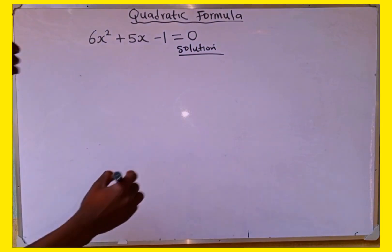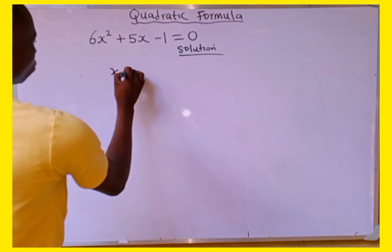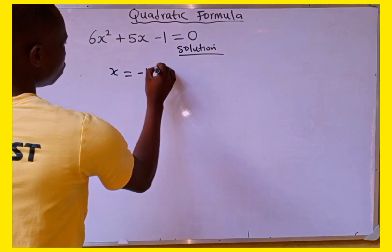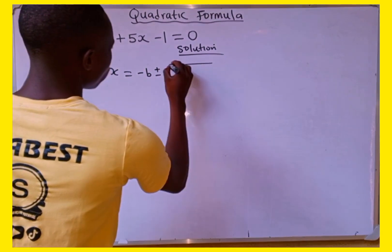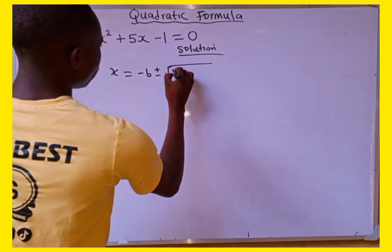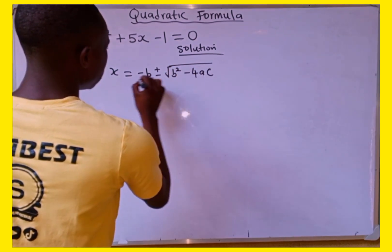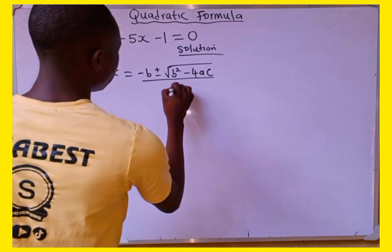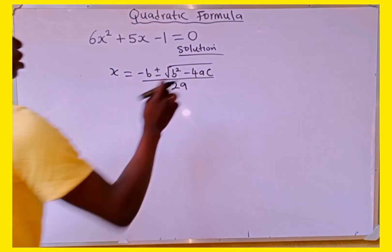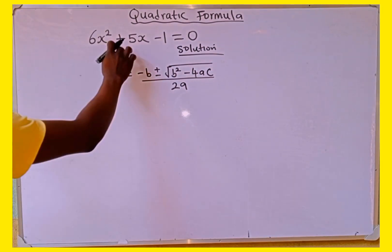The quadratic formula is given as: x equals negative b plus or minus the square root of b squared minus 4ac, all divided by 2a. This is the quadratic formula.